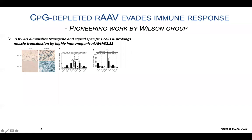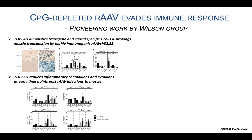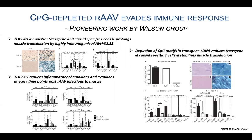Many years ago, pioneer work by Dr. Jim Wilson demonstrated that CpG-depleted AAV evades immune response. They used TLR9 knockout and showed diminished transgene and capsid-specific T-cells and prolonged transduction. They also used the same knockout and showed reduced inflammatory cytokine and chemokine responses at an early stage of AAV transduction. When depleting CpG motifs, they found that transgene cDNA depletion of CpG motifs reduces transgene and capsid-specific T-cells and stabilizes muscle transduction.